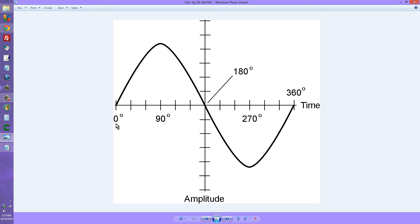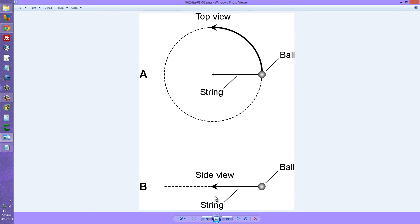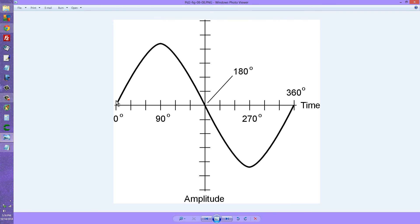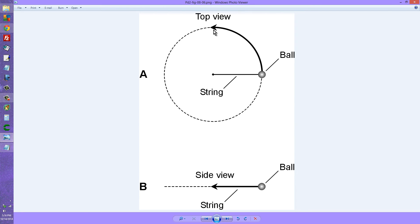Zero degrees is where the ball starts, wherever you choose to make it. Usually it'll be at the zero point or center of the path. That would be something like right here in the center, and then that would be zero degrees. That's the way it's usually done, and it starts going up. When it gets a quarter of the way around, you're at 90 degrees. That would be right here.